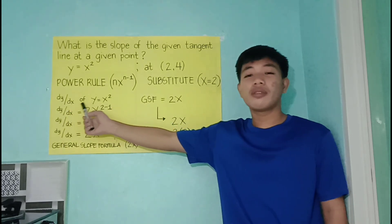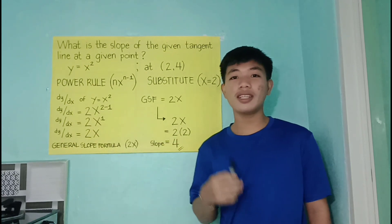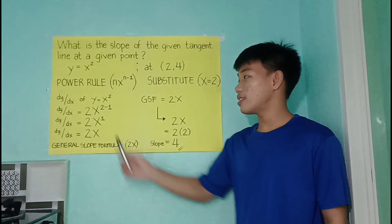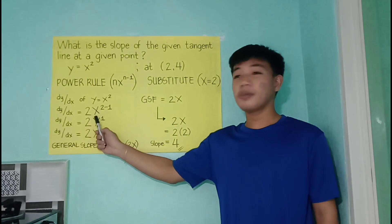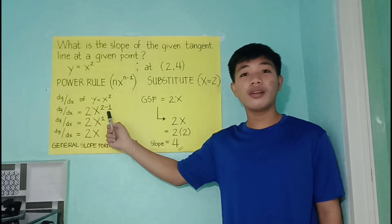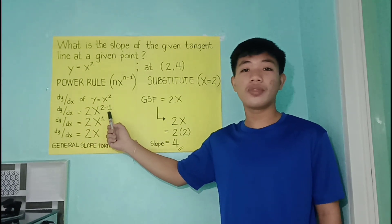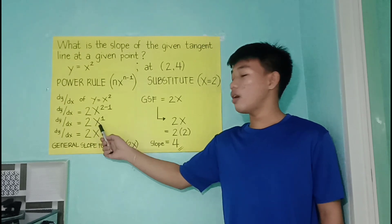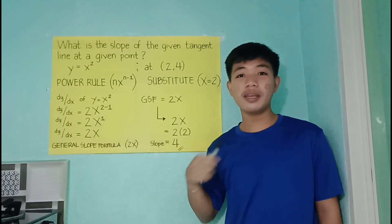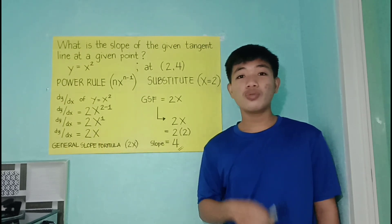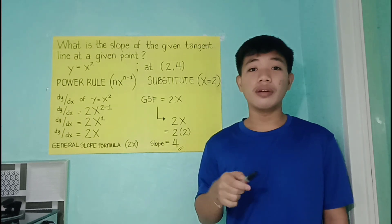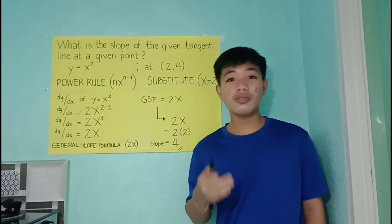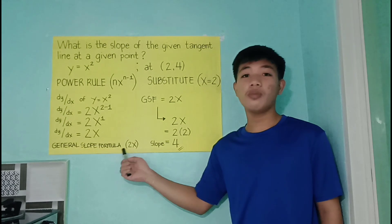So the derivative of y with respect to x of y equals x squared is the same as bring down 2, copy the variable x and subtract 1 to our exponent 2. We'll have 2x raised to 1 which is the same as 2x. So 2x now is our derivative or also known as the general slope formula.